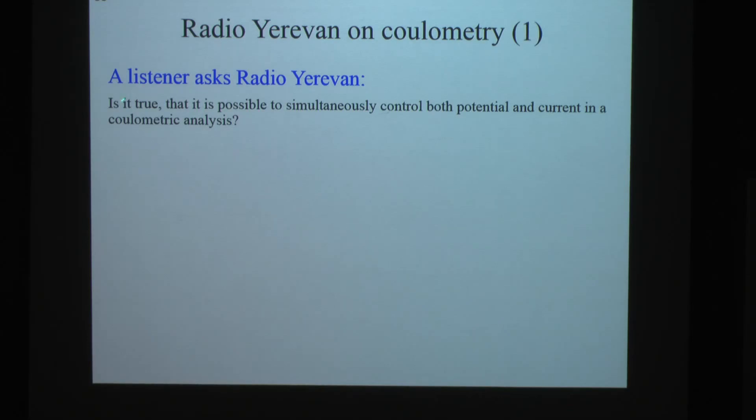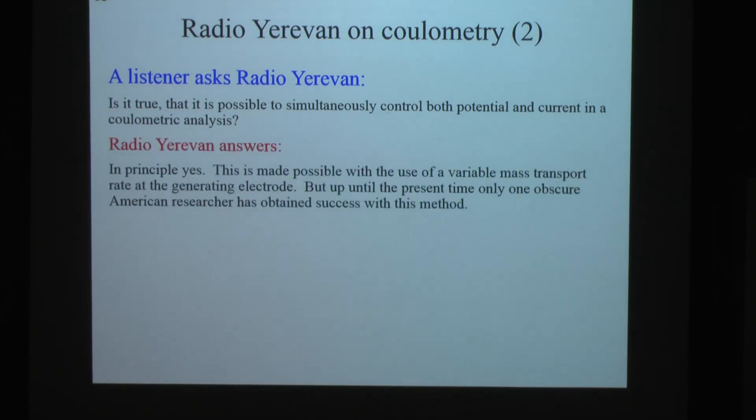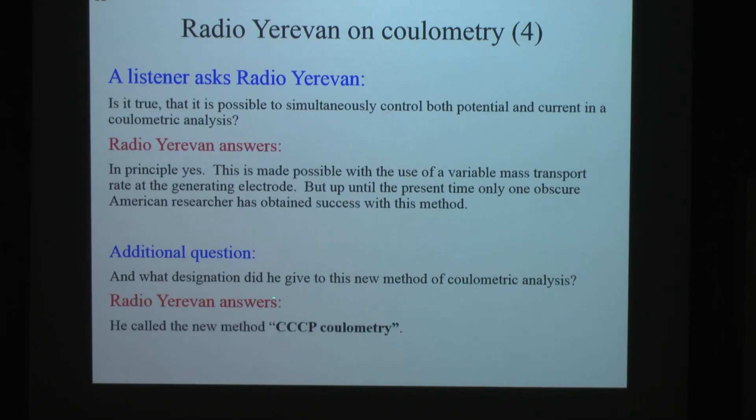So, given that, is it true that it is possible to simultaneously control both potential and current in a coulometric analysis, or to control simultaneously, I should say, the split infinitive. If some of you are sensitive to that, I apologize. Is it true that it is possible simultaneously to control both potential and current in a coulometric analysis? Radio Yerevan, in principle, yes, this is made possible with the use of a variable mass transport rate at the generating electrode. But up until the present time, only one obscure American researcher has obtained success with this method. And then, additional question, and what designation did he give to this new method of coulometric analysis? Radio Yerevan answers, he called the method, he called the new method controlled current, controlled potential coulometry. But if you are Russian looking at that, you see that, you see SSSR, which is the USSR in Russian.